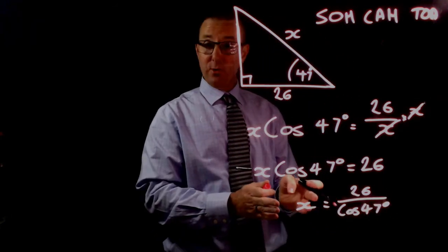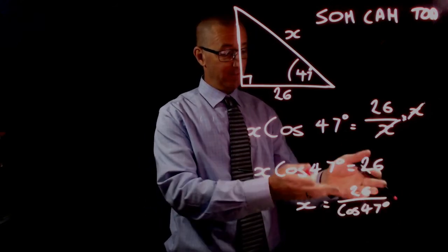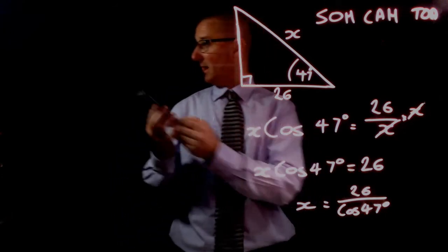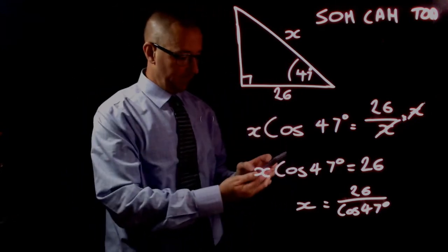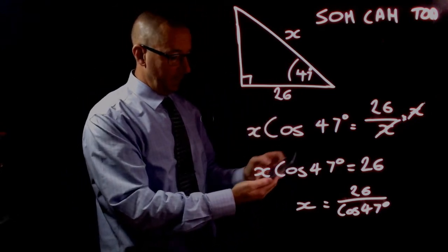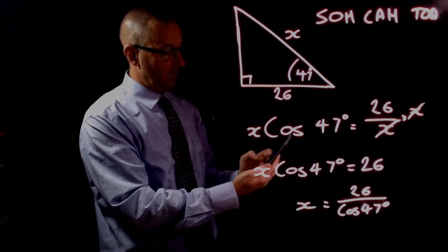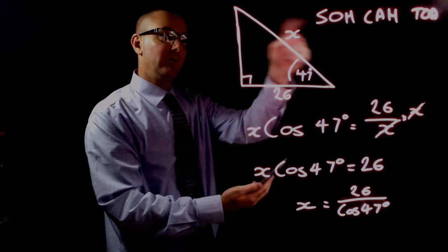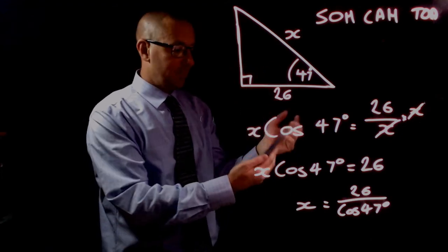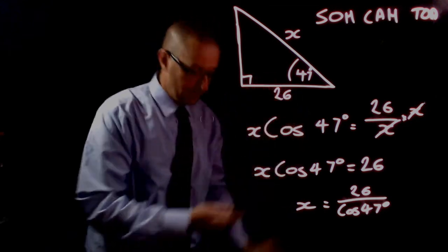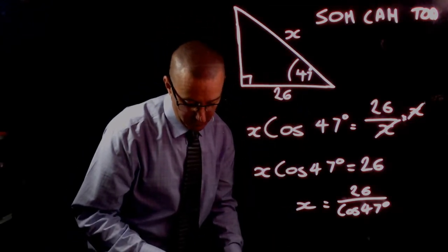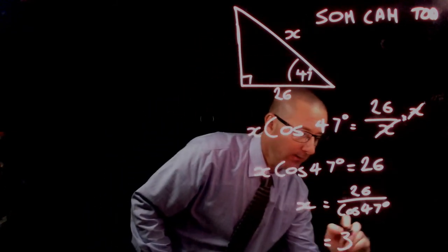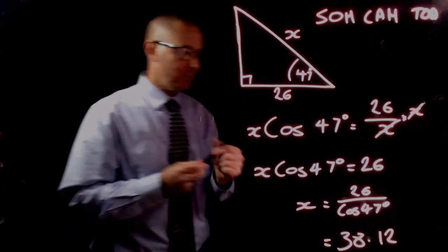We've got our pronumeral on its own on the left and numbers on the right. Using our calculator, 26 divided by cos 47 degrees equals 38.123258883. Since we're looking for a side length, we round to two decimal places: 38.12.